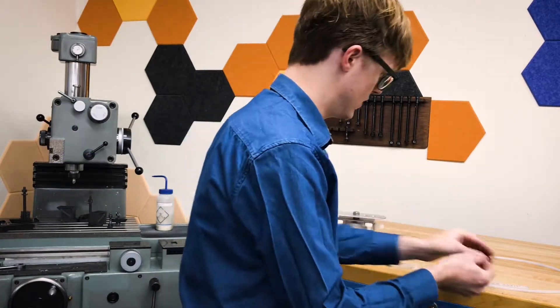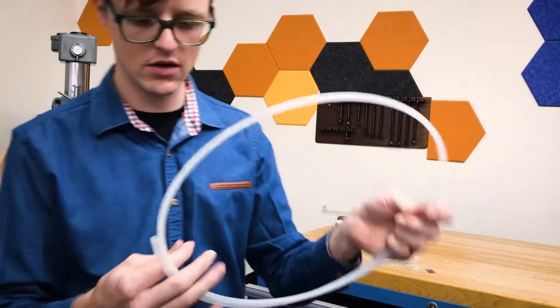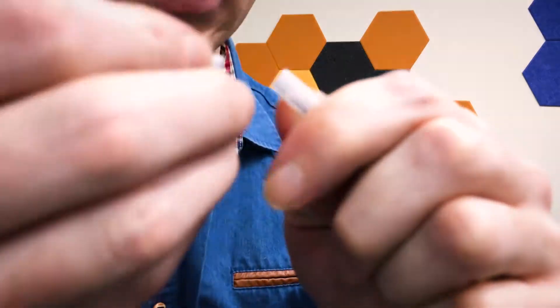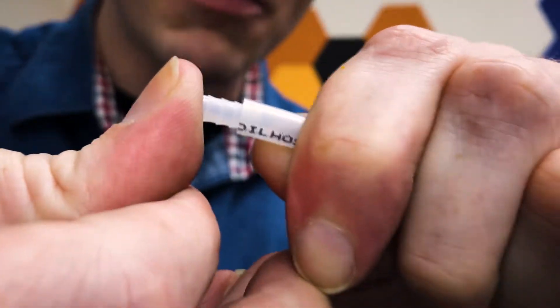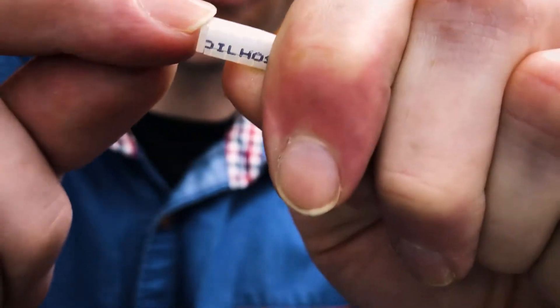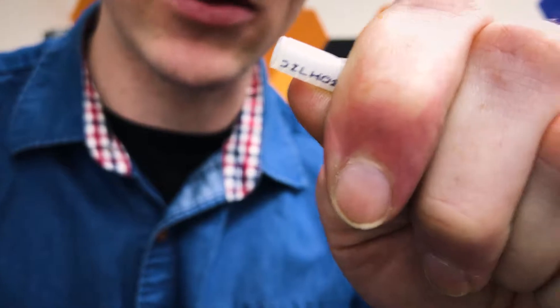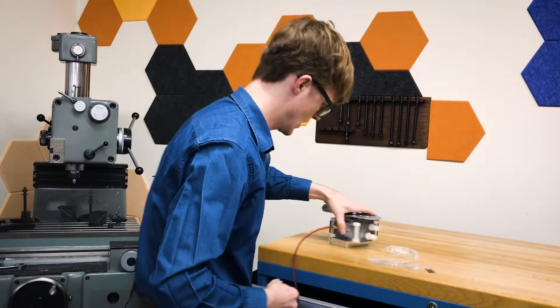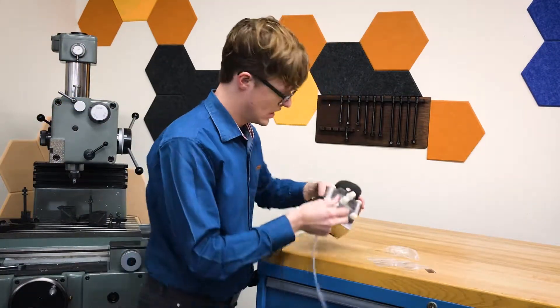So I grab one of these supports out of the baggie there, find the end that I just cleaned up, and I push my support into the tubing until the little flange there contacts the end of the tubing.